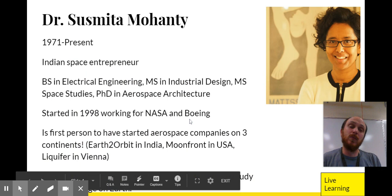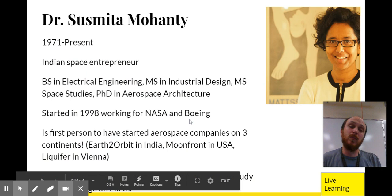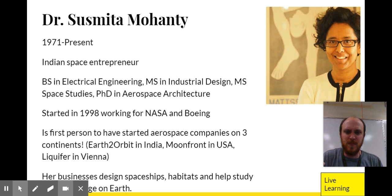So she actually is the first person to have started three aerospace companies on three different continents. She owns and she started a company in India called Earth to Orbit. She started one in the United States called Moonfront. And she started one in Vienna, Austria, in Europe called Liquifer. I don't remember what each of those things do. Google them, look them up, which is really cool. Well, there's those right there at the bottom. But I mean, I don't know which one does which, but they design spaceships, they design habitats.